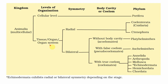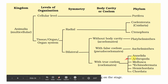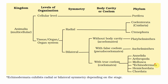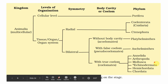Organ system grade of organization, bilateral symmetry, triploblastic with false coelom — phylum Aschelminthes falls into this category. Finally, organ system grade, bilateral symmetry, true coelom, and triploblastic — Annelida, Arthropoda, Mollusca, Echinodermata, Hemichordata, and Chordata come into this category. Remember that echinoderms are very interesting: adult forms show radial symmetry, whereas larval stages show bilateral symmetry. This is an important point.